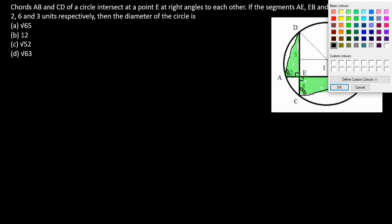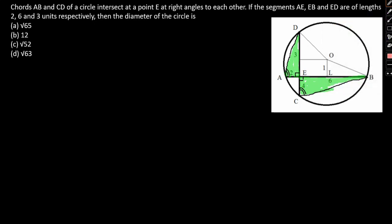So from the figure itself, what we can write is, CE by AE will be equal to EB by ED. If we take a look at the figure, CE will be 4, right, CE will simply be 4 by just solving.